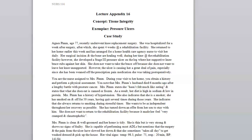Mrs. Pym states she hasn't felt much like eating and states that what she does eat is canned or frozen. As a result, her diet is high in sodium and low in protein. Mrs. Pym has a history of hypertension. She also indicates that she is a smoker. She has smoked on and off for 50 years, having quit several times during those years. She indicates that she always returns to smoking during stressful times. She wants to be as independent throughout her recovery as possible. She has turned down an offer from her son to stay with him. She does not want to return to the rehabilitation facility because it made her feel very cramped and claustrophobic.